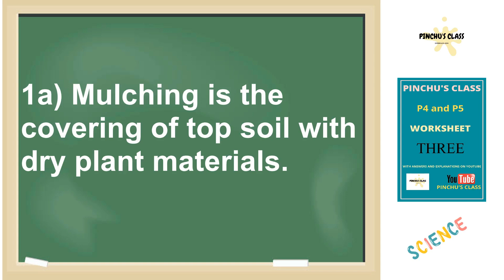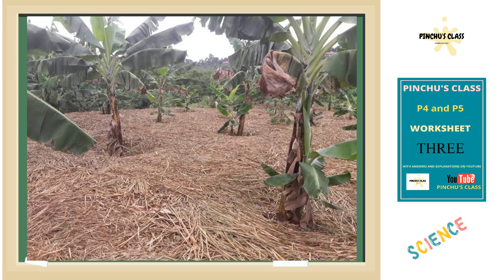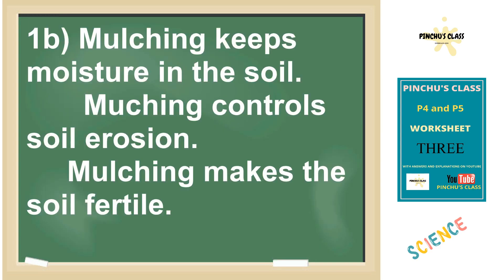Number one A: mulching is the covering of topsoil with dry plant materials. We have to put the word 'dry plant materials,' not just 'plant materials' — I know most people make that mistake.